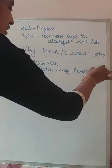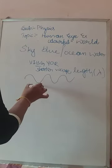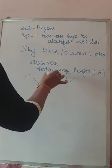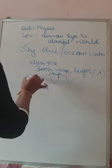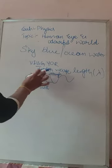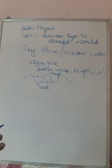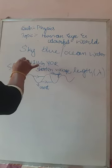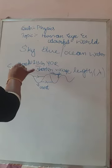Wavelength is denoted by the Greek letter lambda. The distance between two successive crests or two successive troughs is called wavelength. The blue color has a shorter wavelength — the wavelength is very small — and it is scattered more.